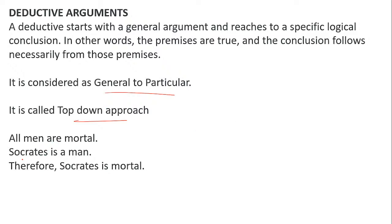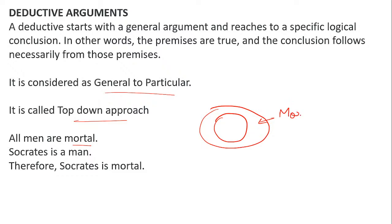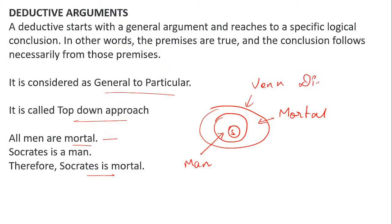We go from a general statement — 'all men are mortal' — to a particular statement: 'Socrates is mortal.' This is deductive reasoning. For deductive reasoning, we use Venn diagrams. The large circle represents 'mortal,' the smaller circle represents 'man,' and Socrates falls within the man circle, which is inside the mortal circle, illustrating the conclusion.